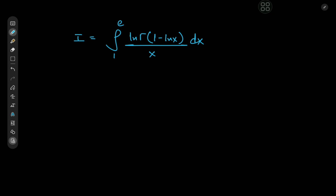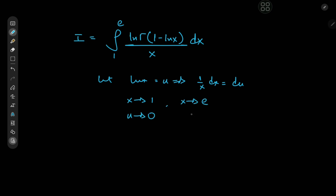Anyway, we have the integral from 1 to e of log·Γ(1 − log x) / x dx. It looks like we could use the substitution log x = u, which implies that (1/x) dx = du. As x tends to 1, u tends to log 1 = 0, and as x tends to e, u tends to log e = 1. This gives us I = ∫₀¹ log·Γ(1 − u) du.